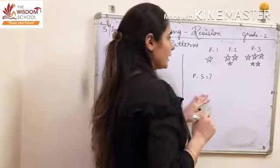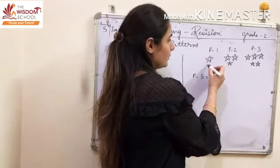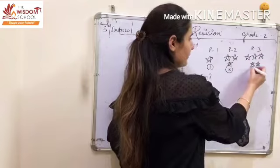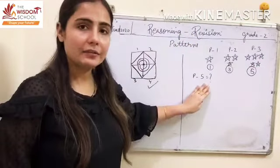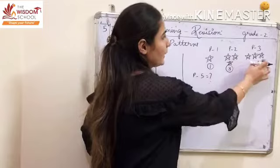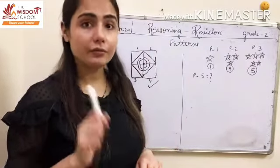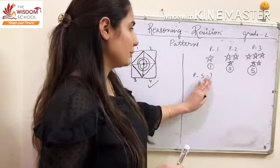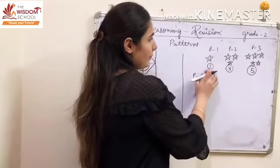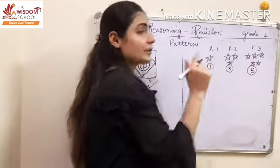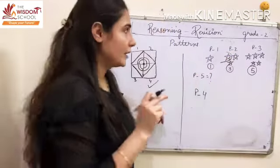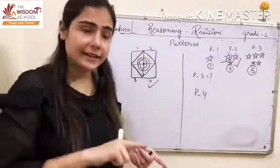Now in this type of question, you are given pattern one, pattern two and pattern three. In pattern one, how many stars are there? One. In pattern two, there are three stars. In pattern three, there are five stars. You need to find how many stars will be in pattern five. First, note that between pattern one and three there is a missing pattern four. We will find pattern four before pattern five.